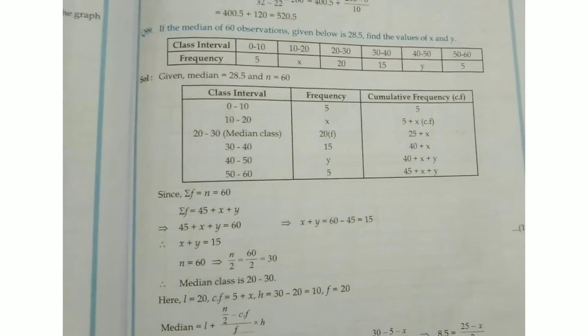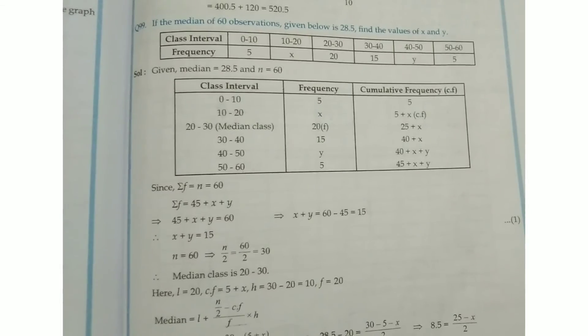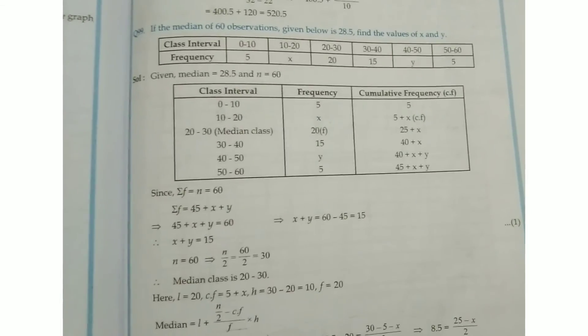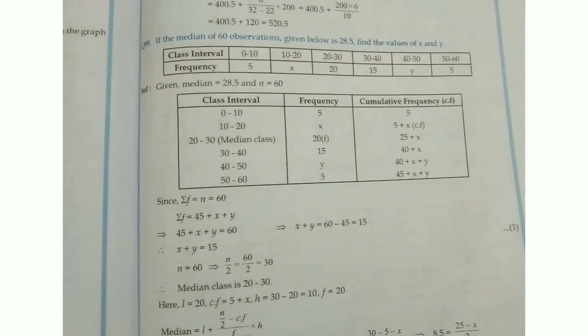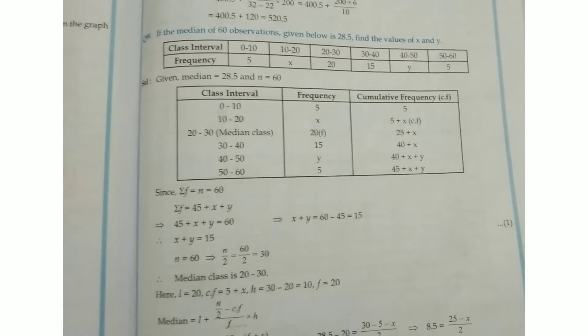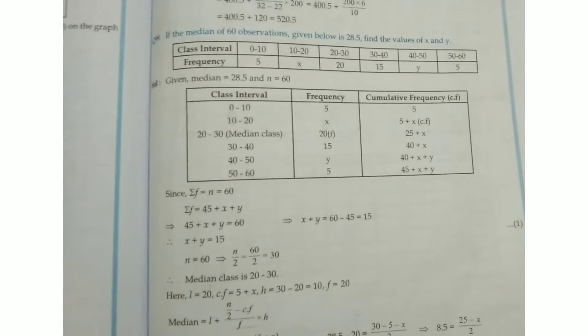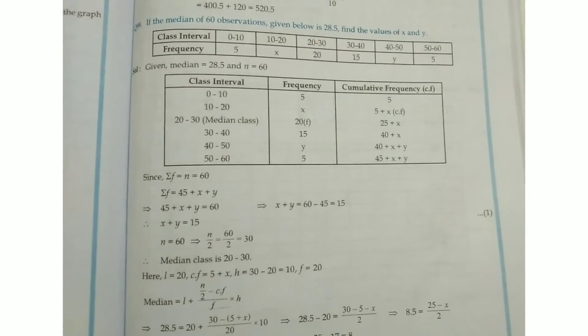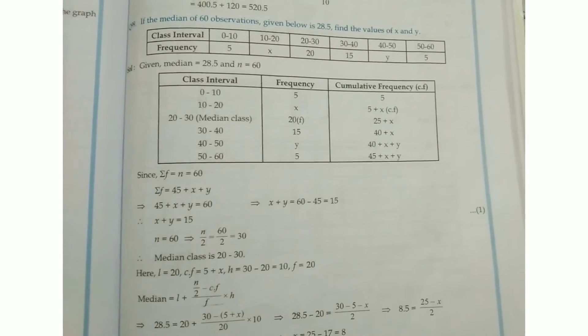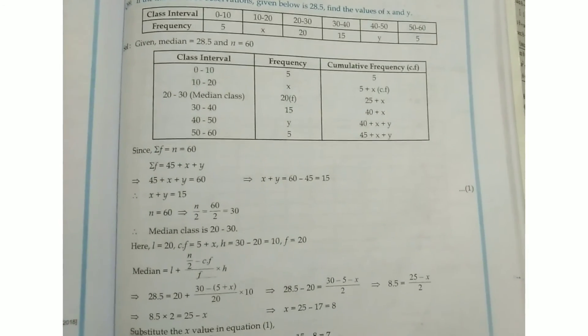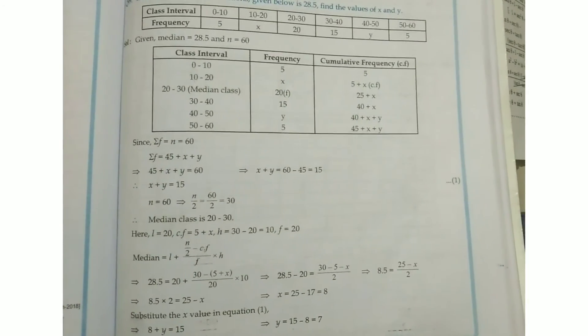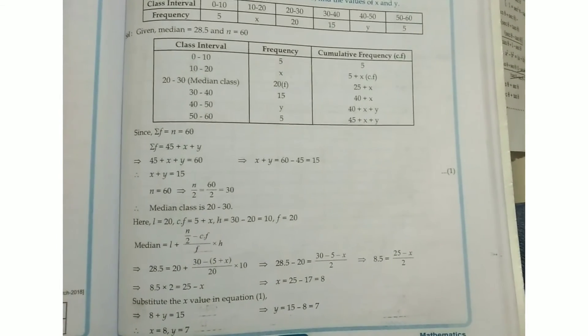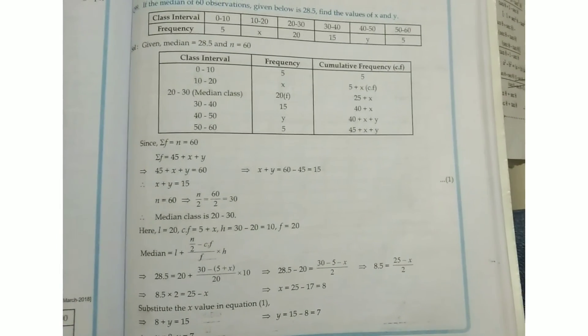Another important expected question: if the median of 60 observations is 28.5, find the values of x and y. Watch the video carefully to see the solution. The values of x and y are 8 and 7.